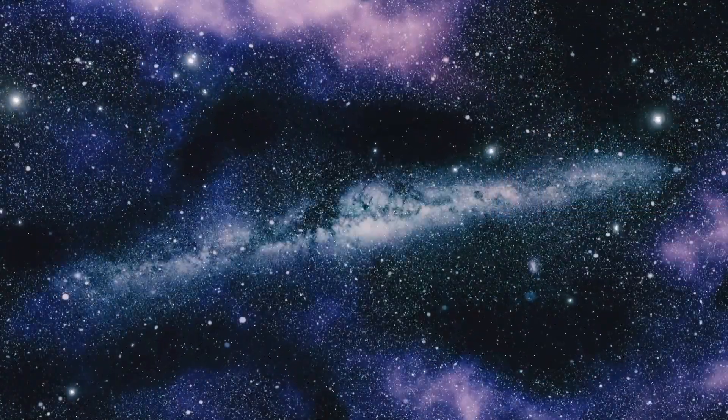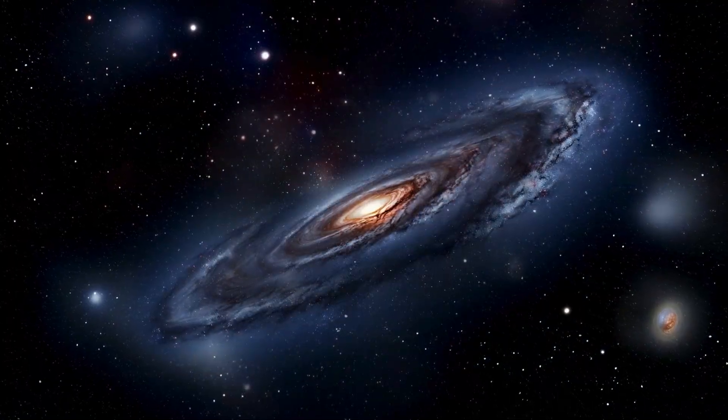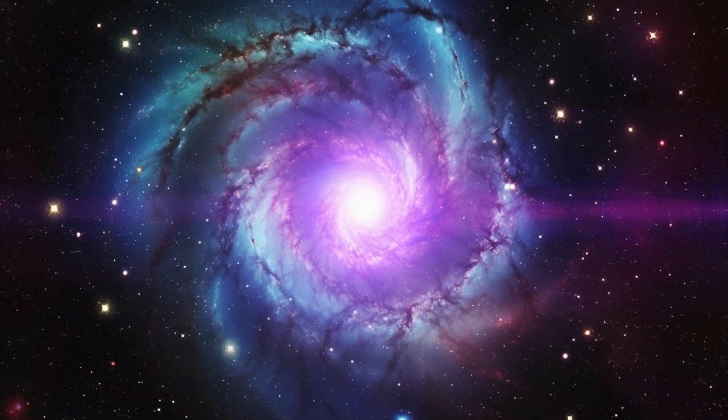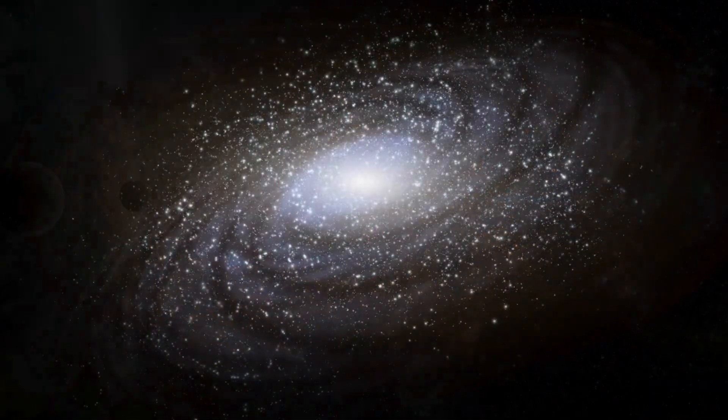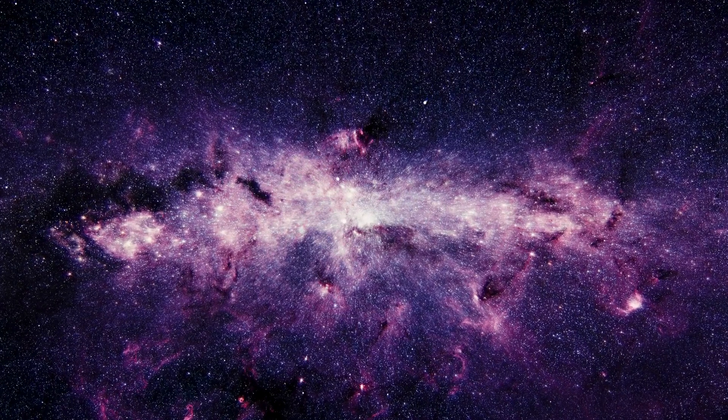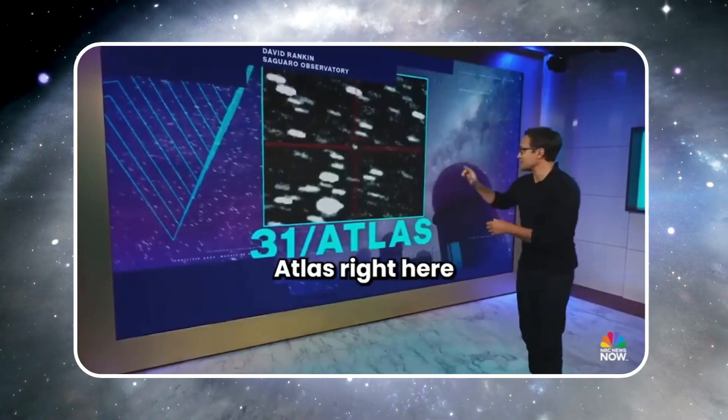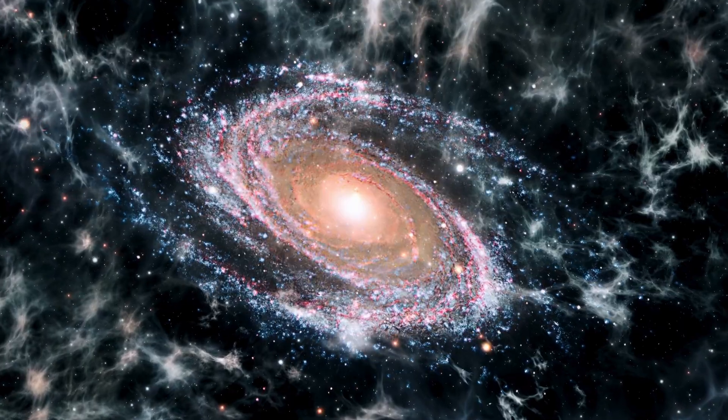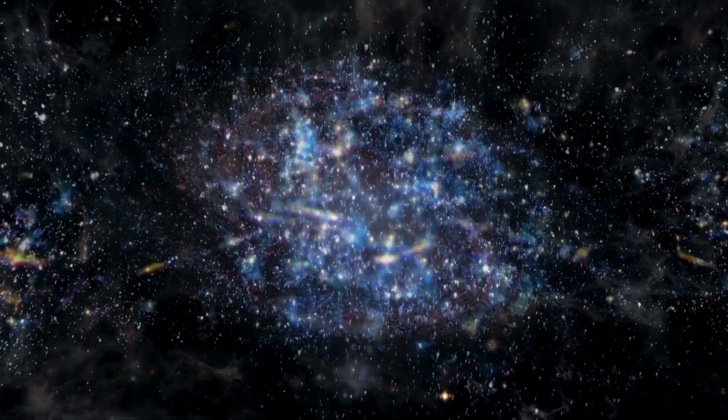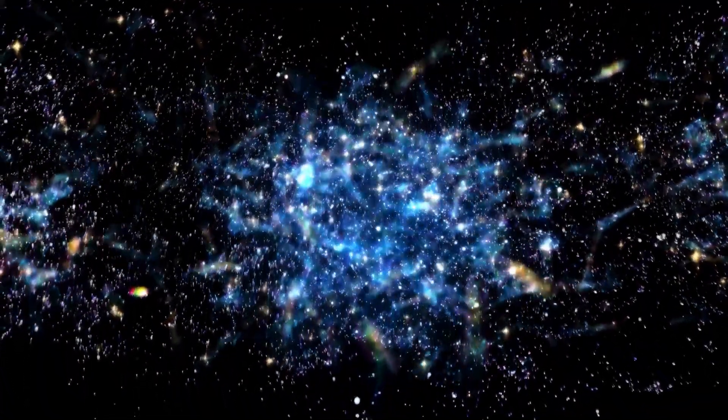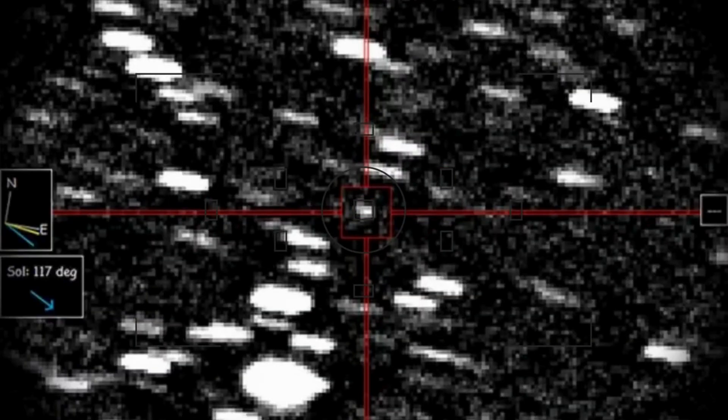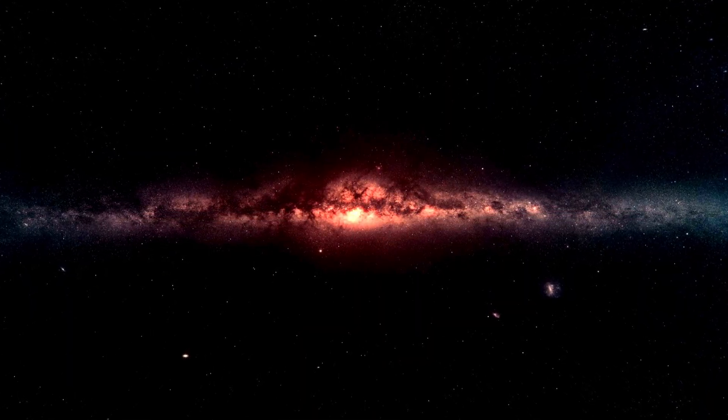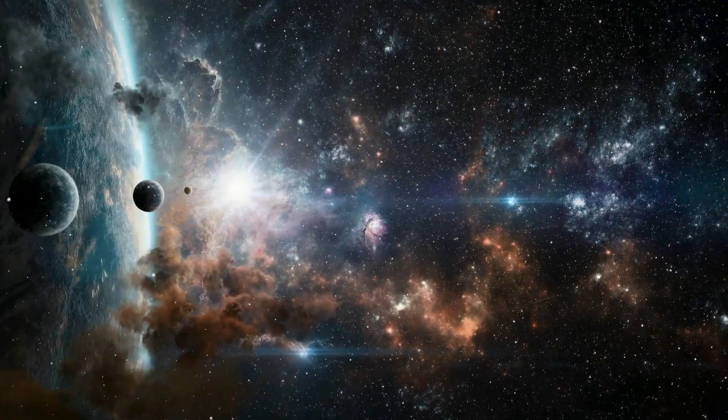The universe doesn't play by our rules, and 3I-Atlas is a stark reminder of that. As it races toward its fiery dance with the sun, the possibility of it veering closer to Earth looms like a shadow over our hopes. Right now, it's a distant marvel, 420 million miles away, set to pass us at a safe 167 million miles in December 2025. But comets are wild things, and this one is no ordinary traveler. Its massive bulk, 12 to 20 kilometers wide, bigger than the rock that ended the dinosaurs, is heating up, and with that heat comes chaos. Gases trapped deep within its core could erupt, shoving it off its neat, predictable path. A tiny shift, a fraction of a degree, could bring it millions of miles closer to us, and at its blistering speed of 150,000 miles per hour, we'd have little time to react.